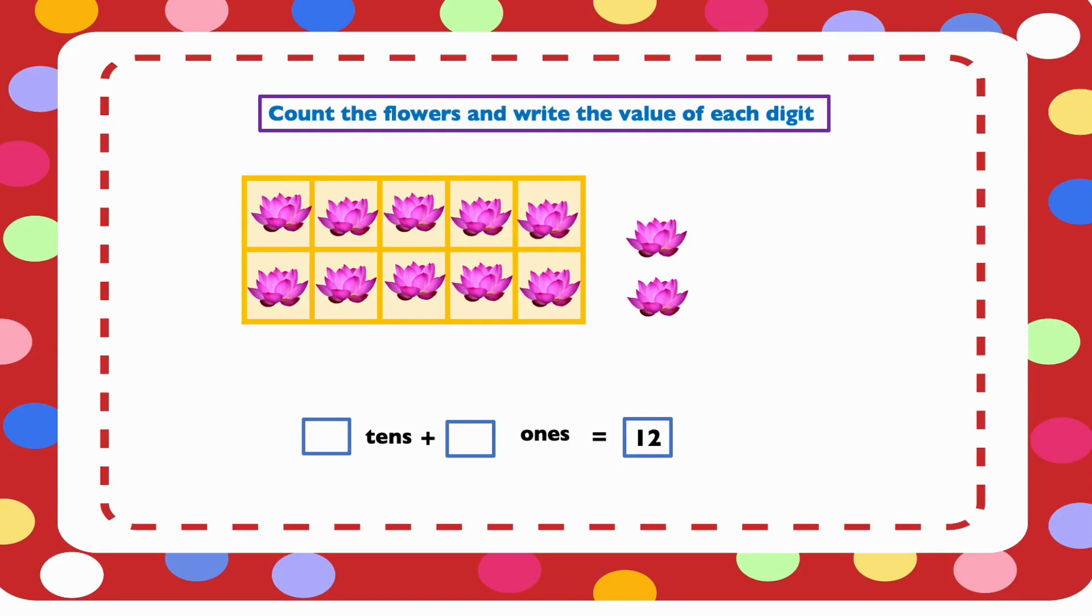We have 1 group of 10. And then we have 1 and 2. So we have 1 ten and 2 ones. So the value of 1 in 12 is 1 ten and the value of 2 is 2 ones.